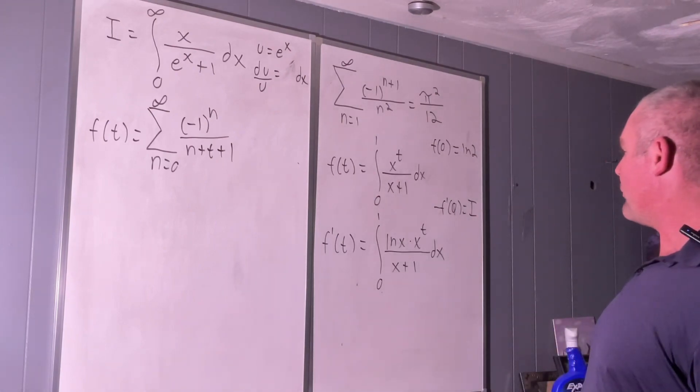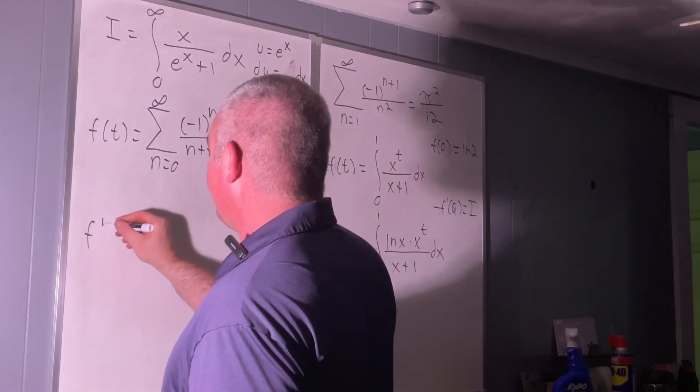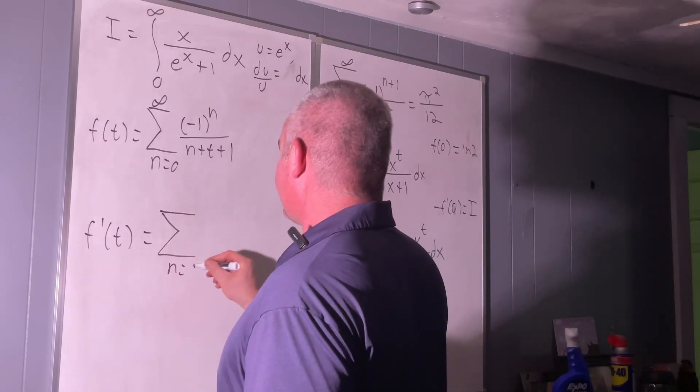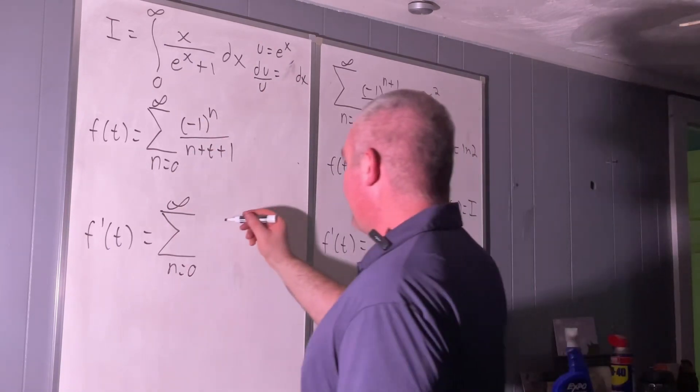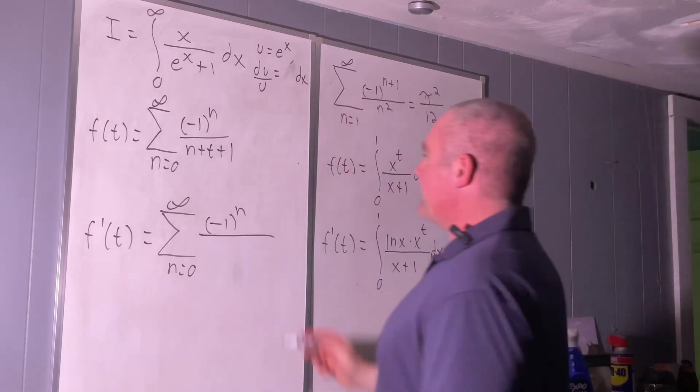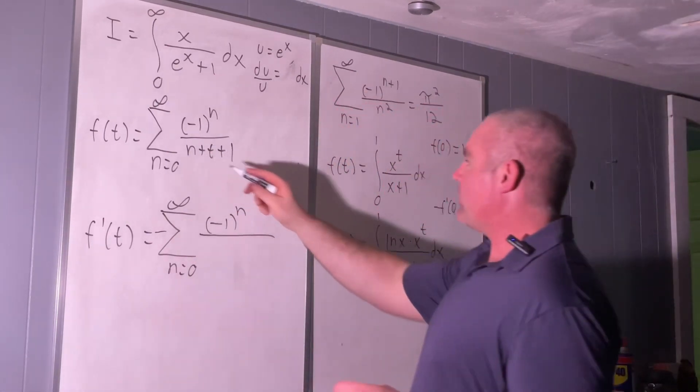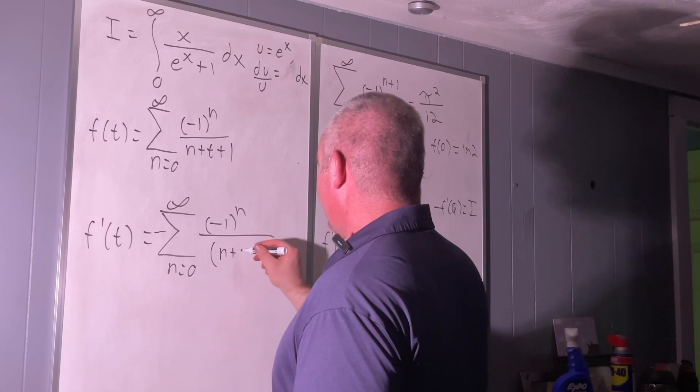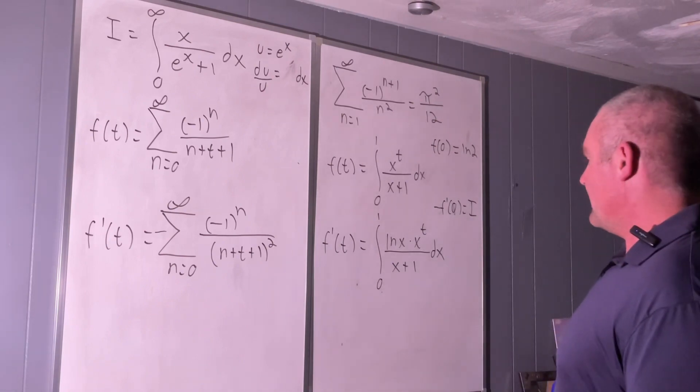We're going to need to find f prime of t as a sum though. That's easy though. So that's going to be f prime of t is just going to be equal to the sum as n equals zero to infinity of the derivative with respect to t of this thing right here. So we'll still have negative one to the n, but this is really n plus t plus one to the negative one. So we'll get negative one. So we'll get negative n plus t plus one to the negative two, or just one over n plus t plus one all squared. Okay.